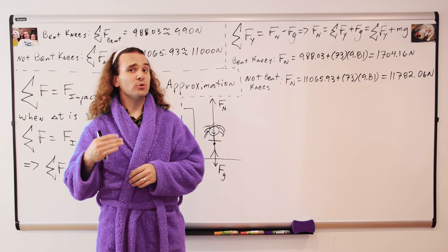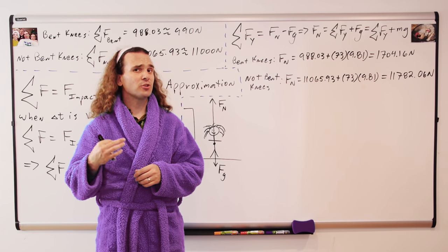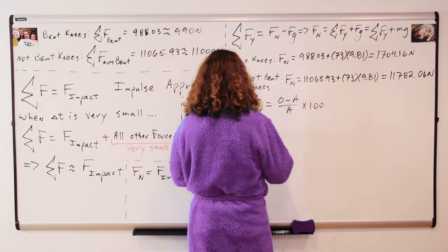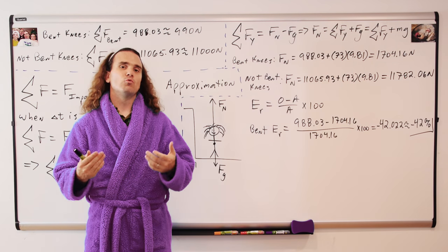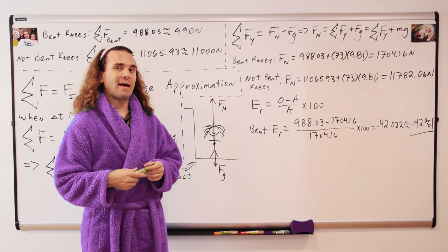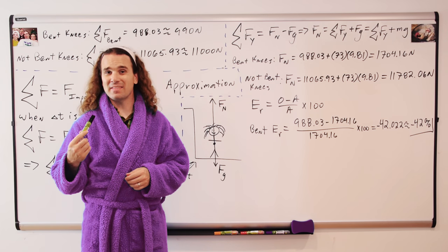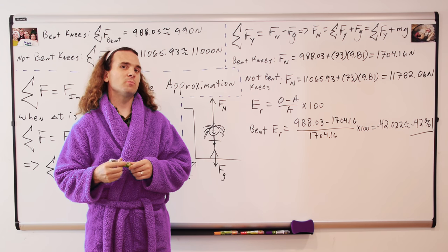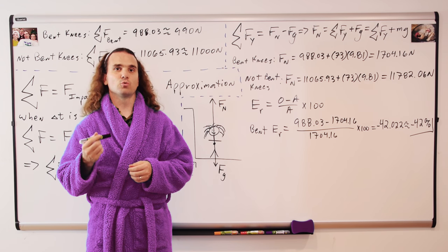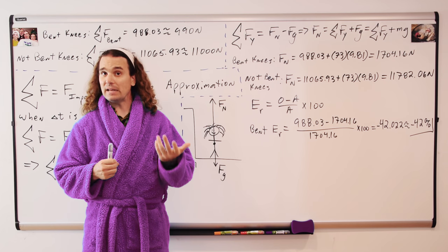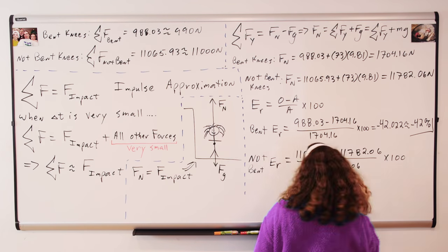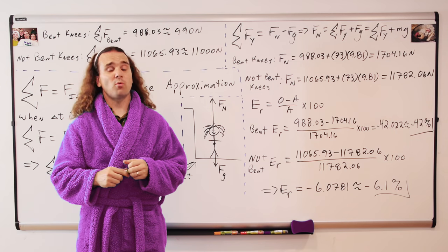And we can use the relative error equation to determine how accurate the impulse approximation was. Relative error equals observed value minus the accepted value divided by the accepted value times 100. For the bent knee case, that works out to be roughly negative 42%. For the not bent knee case, that works out to be negative 6.1%.